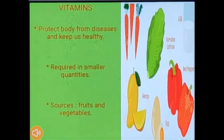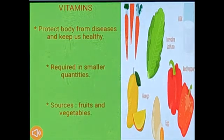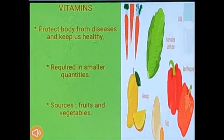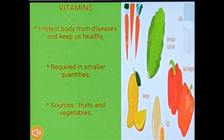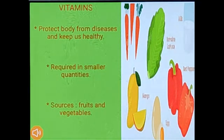Now let us discuss vitamins, which are a very important type of nutrient. The function of vitamins is to protect the body from different types of diseases, keeping us healthy. As you can see in the figure, the sources of vitamins are fruits and vegetables. You need to eat a proper amount of fruits and vegetables to stay healthy and fit. Vitamins are also required in smaller quantities compared to carbohydrates.